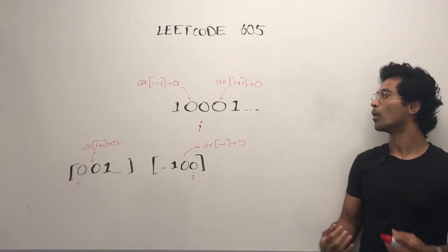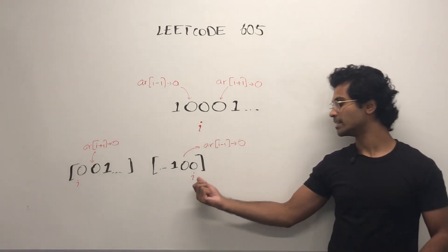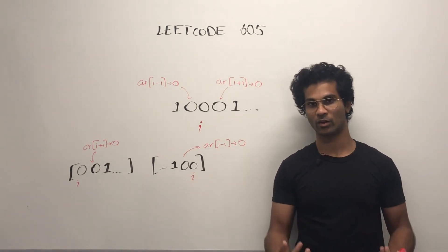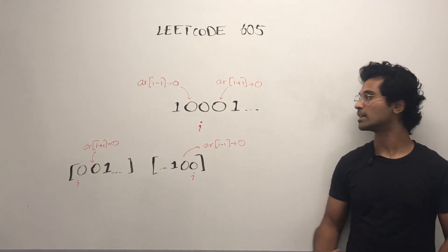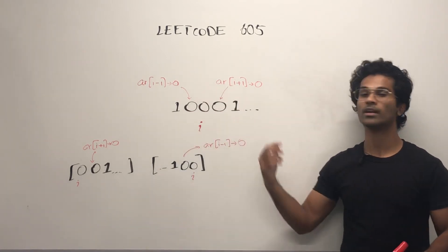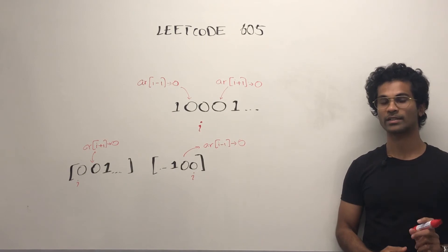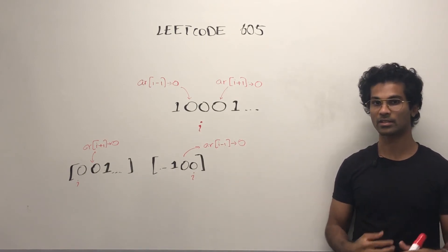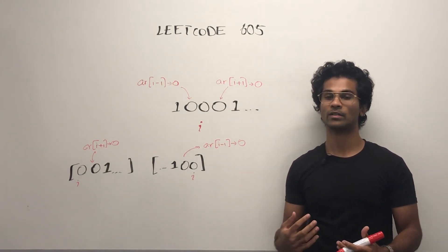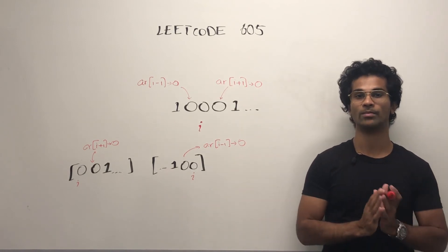So essentially, we're always checking if an index at i is going to be 0 and then we try to see if i-1 or i+1 is 0. Otherwise, if we're at the edge cases, the beginning and end of arrays, then we have to simply make sure that we're at the end or the beginning.